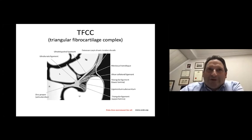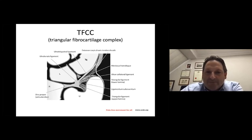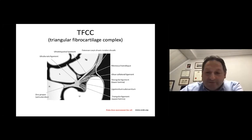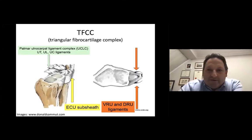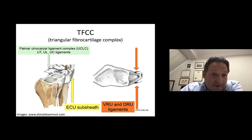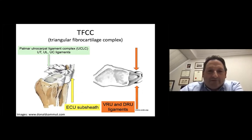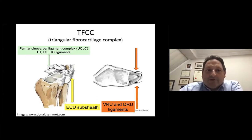The most relevant attachment of the TFCC to the ulna, from a functional point of view, is the foveal attachment — the one to the base of the styloid. You also have the meniscus, the collateral ligament, and the dorsal and volar radio-ulnar ligaments that contribute to the stability of the carpus and of the DRUJ. We also need to remember that the extensor carpi ulnaris tendon sub-sheath is regarded as a component of the TFCC, and we have the palmar ulnocarpal ligament complex — the ulnotriquetral, ulnolunate, and ulnocapitate ligaments — which are also relevant in case of an injury.